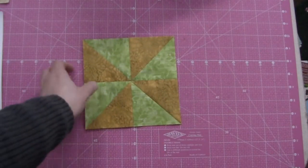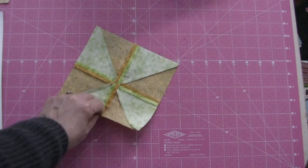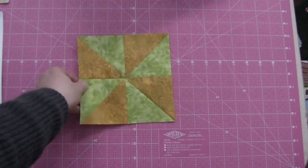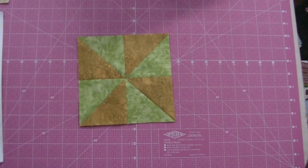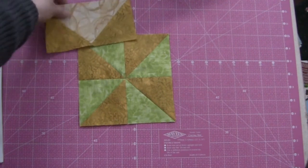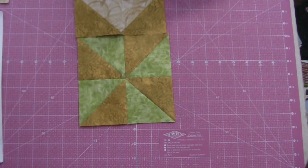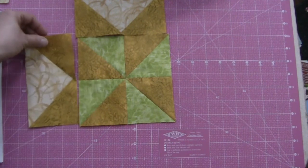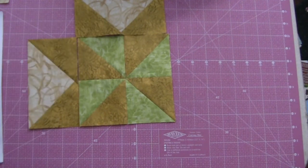Okay, here's my center pinwheel made and I pressed my seams open as I said I was going to. So now we can lay out the rest of the block, which involves putting our flying geese on every side with the point to the inside.